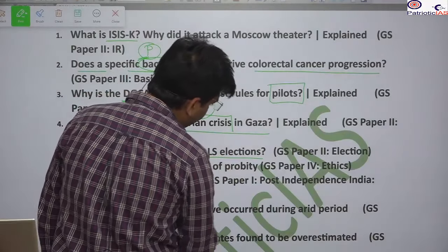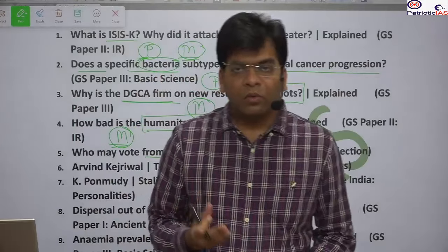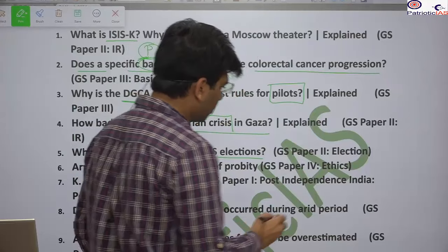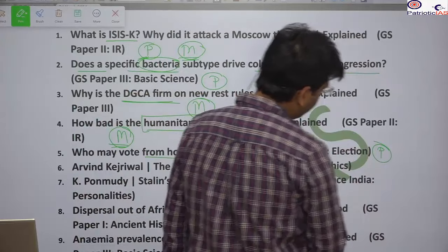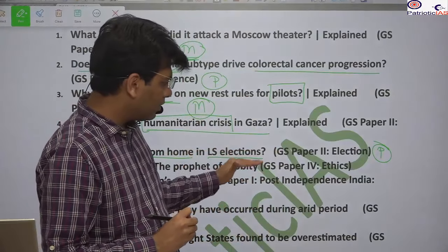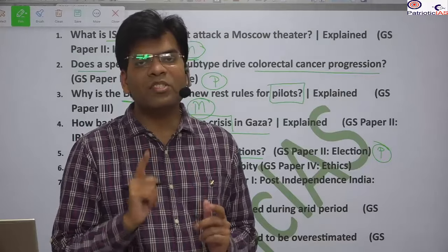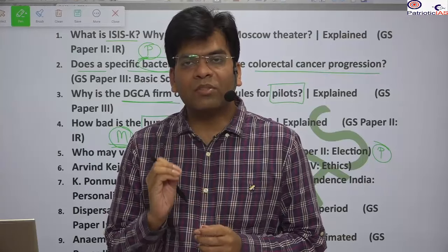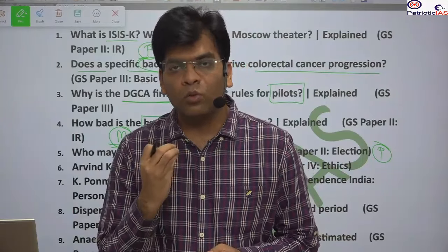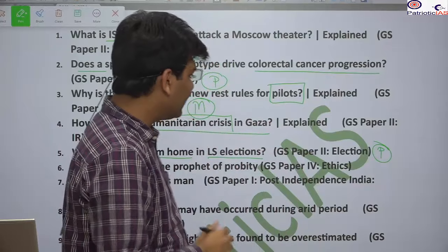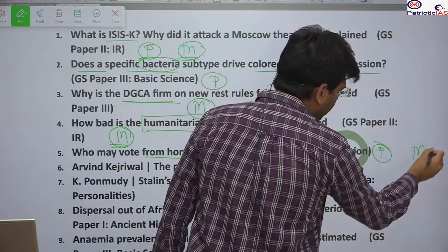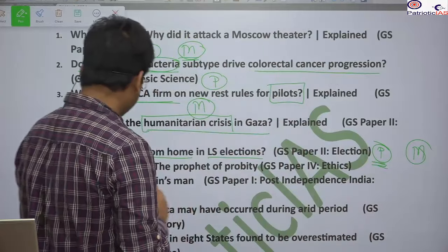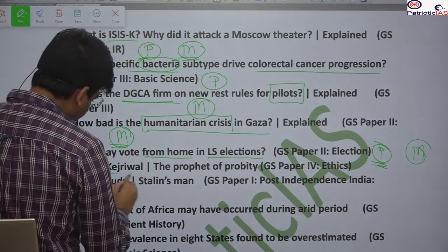We will study who may vote from home in the legislative assembly elections. Vulnerable groups such as the elderly and disabled can vote from home. This is relevant for prelims — you should know the basic characteristics of the plan and the age group parameters. For mains, we will study the election commission's reforms to make elections more inclusive and democratic.